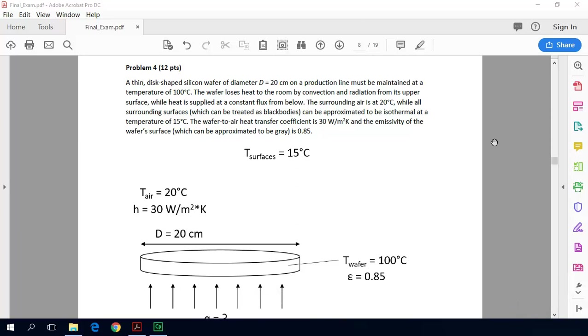The problem states, a thin disc-shaped silicon wafer of diameter d equals 20 centimeters on a production line must be maintained at a temperature of 100 degrees Celsius. The wafer loses heat to the room by convection and radiation from its upper surface, while heat is supplied at a constant flux from below.